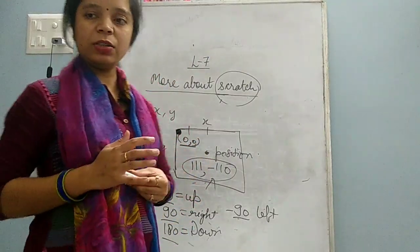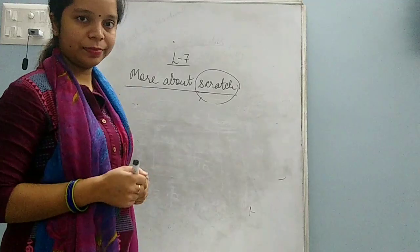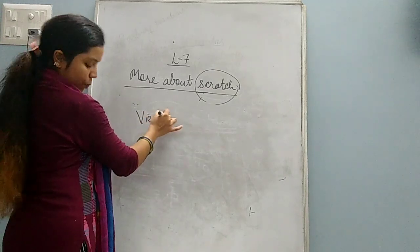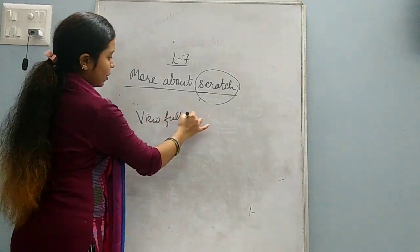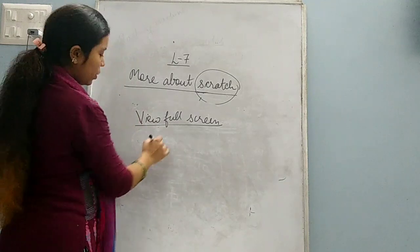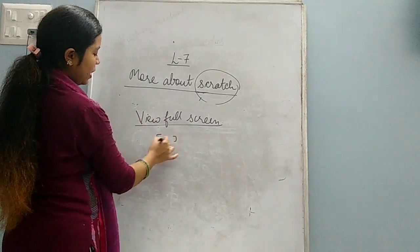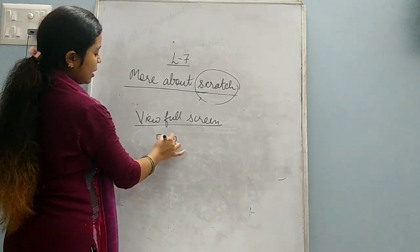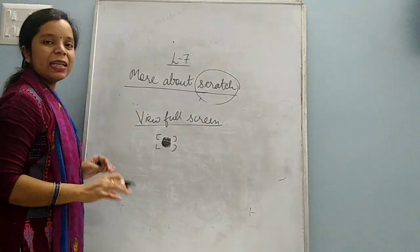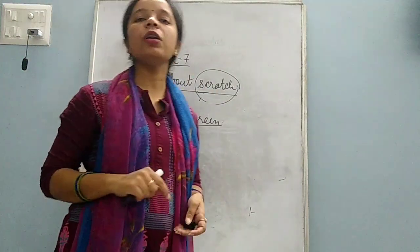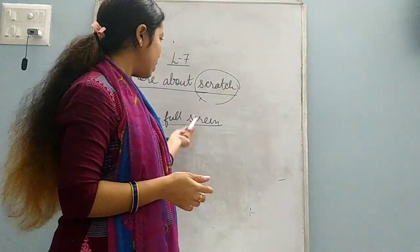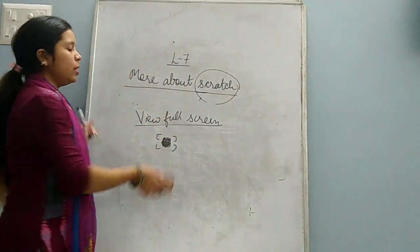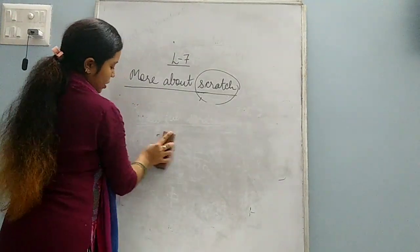Now next one given in your book is view full screen. This is simply a button - view full screen button. When you will click on this button, this will open scratch on the full screen of your computer. So this is the work of full screen - you can understand from the word only. It will come on full screen of your computer.